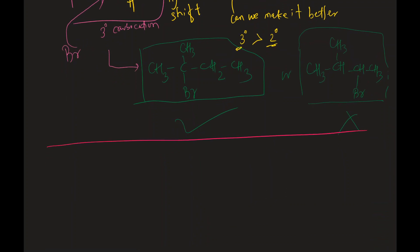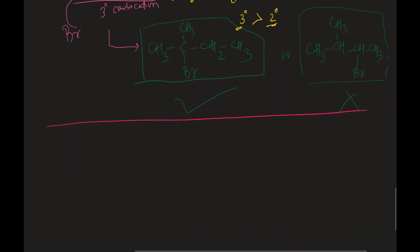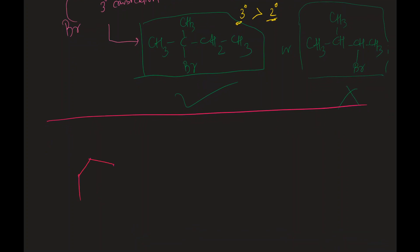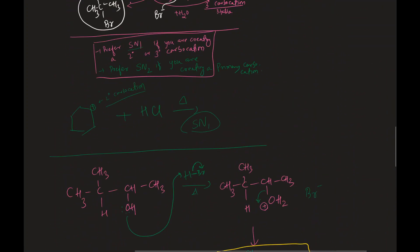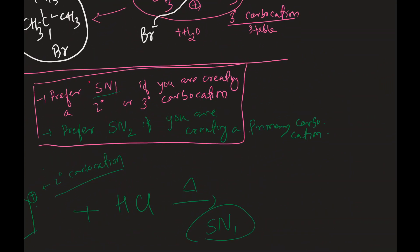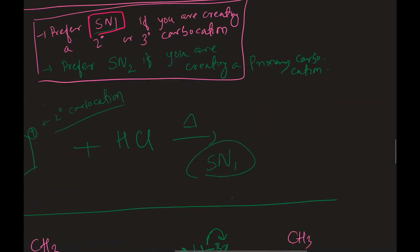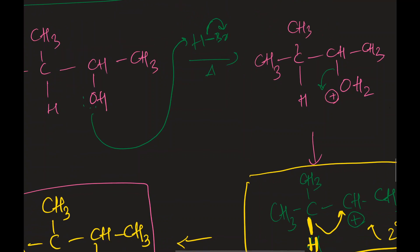Pay attention to carbocation rearrangement. If a reaction is forming a primary carbocation and there is a possibility to rearrange to a tertiary one, it will always do so. The reaction always prefers SN1 and will rearrange to the most stable carbocation. That is the key takeaway from this video.